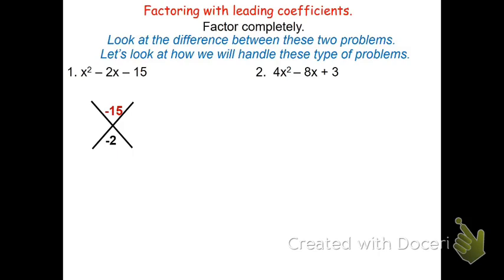Two numbers that multiply to be negative 15 and add to be negative 2 would be negative 5 and 3. Negative 5 times 3 is negative 15, and negative 5 plus 3 is negative 2. This helps me find my factored form. The factored form of x squared minus 2x minus 15 would be the quantity x minus 5 times the quantity x plus 3.